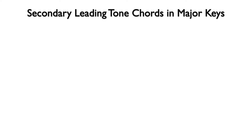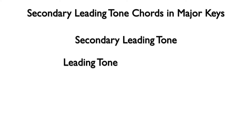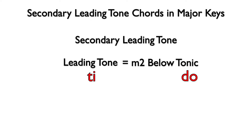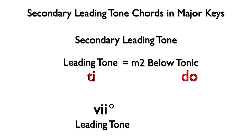Let's define the term secondary leading tone. The word leading tone refers to the note that is a minor second below the tonic in a major or minor key. In solfege, tonic is do and the leading tone is ti. The root of any leading tone chord will be the leading tone of the key. The role of the leading tone chord, like the dominant chord, is to pull back to the tonic — also known as the one chord — and make it feel like the home chord of the key.